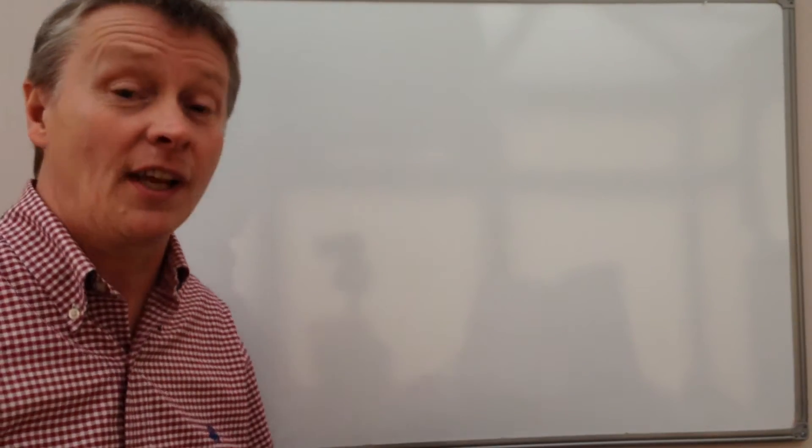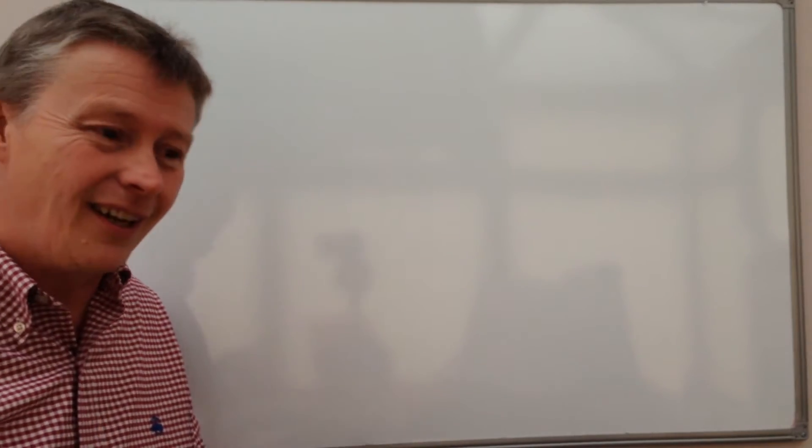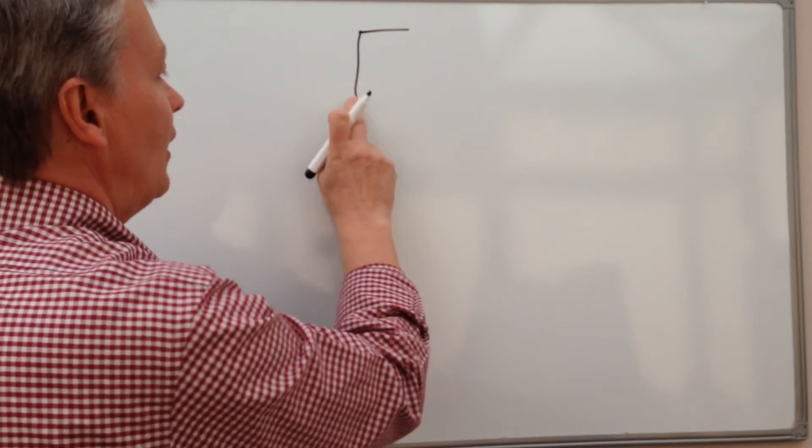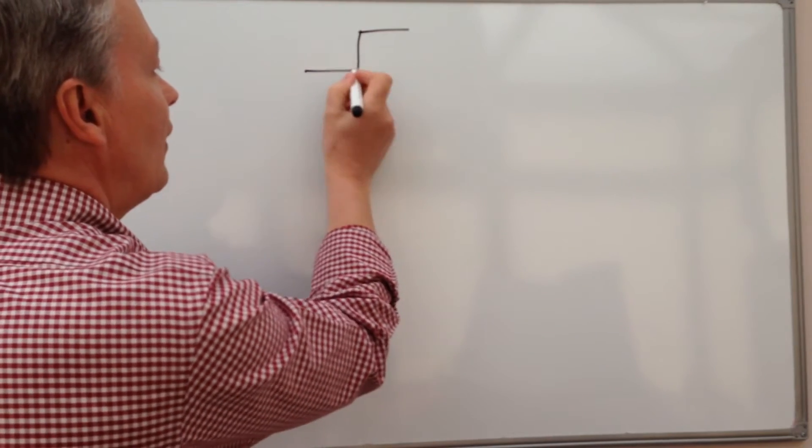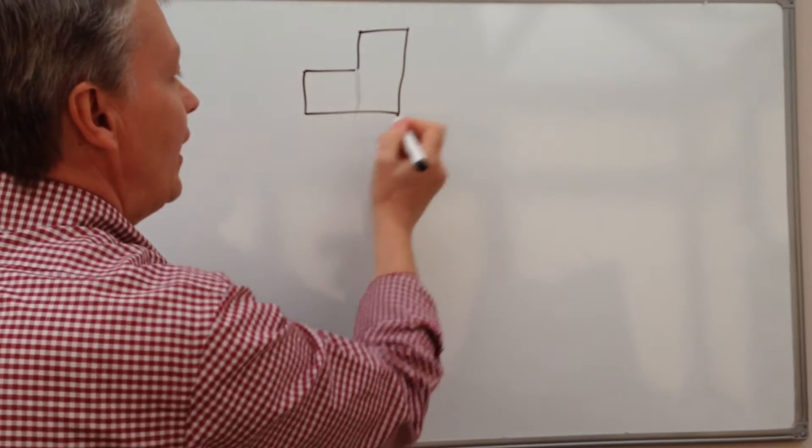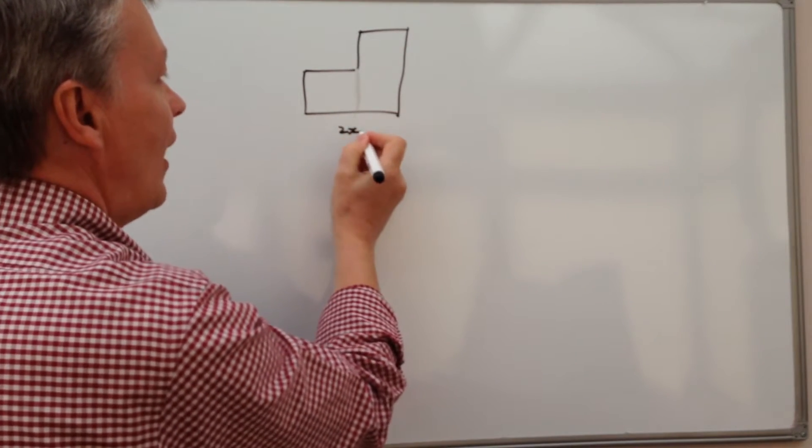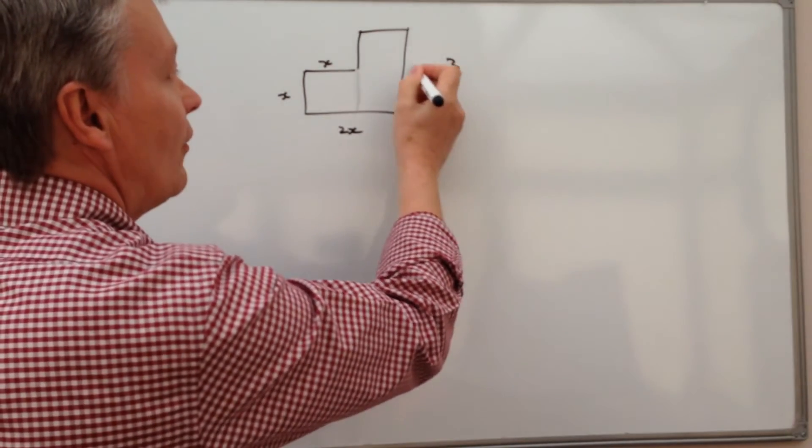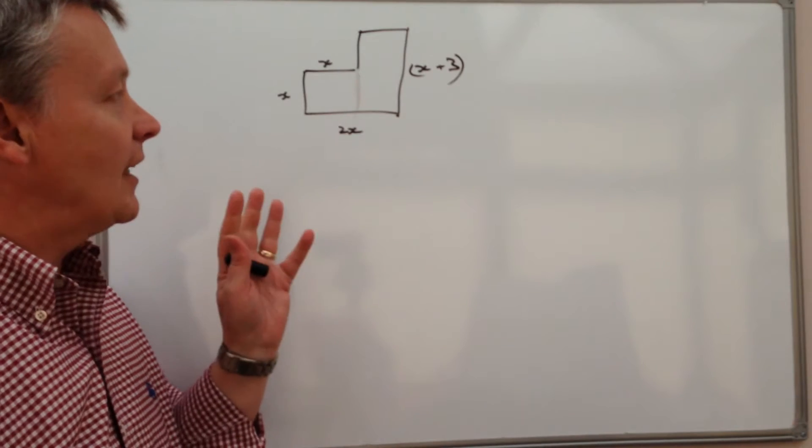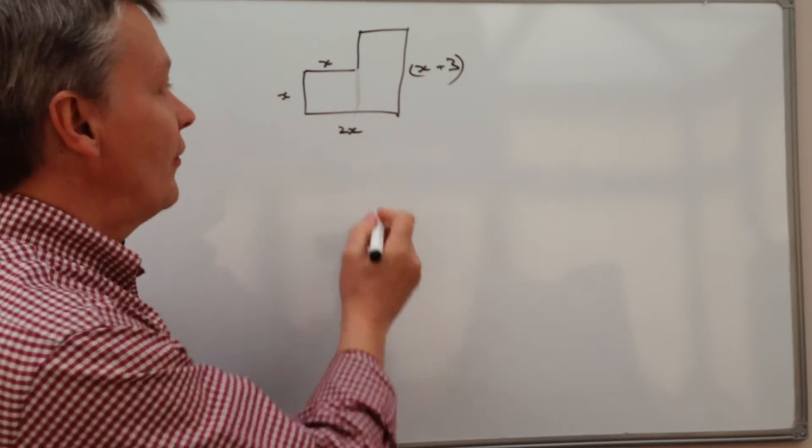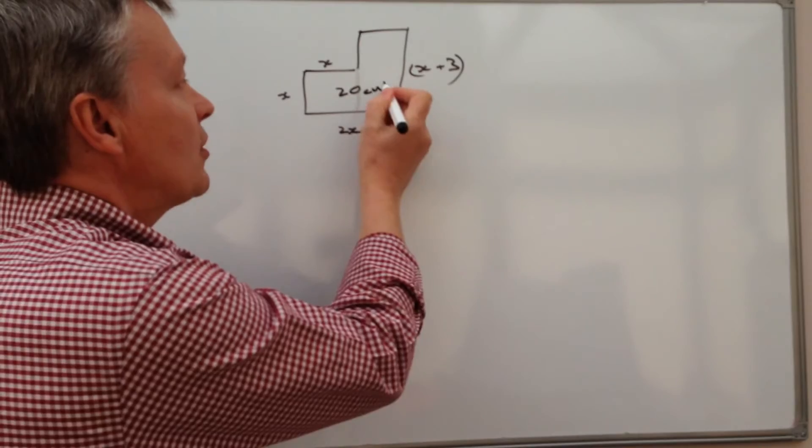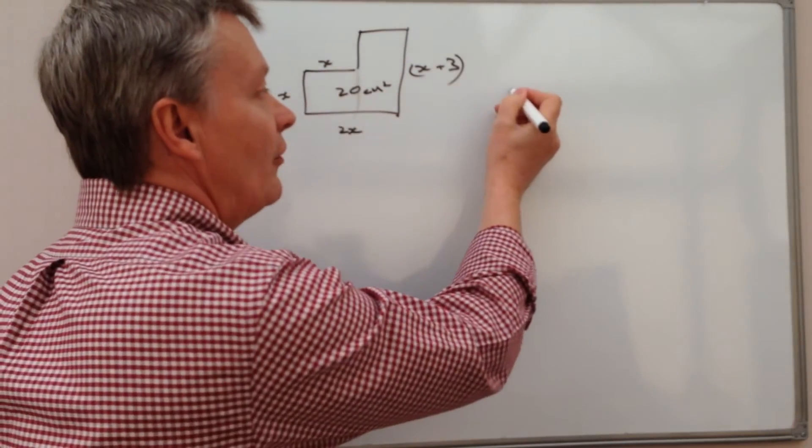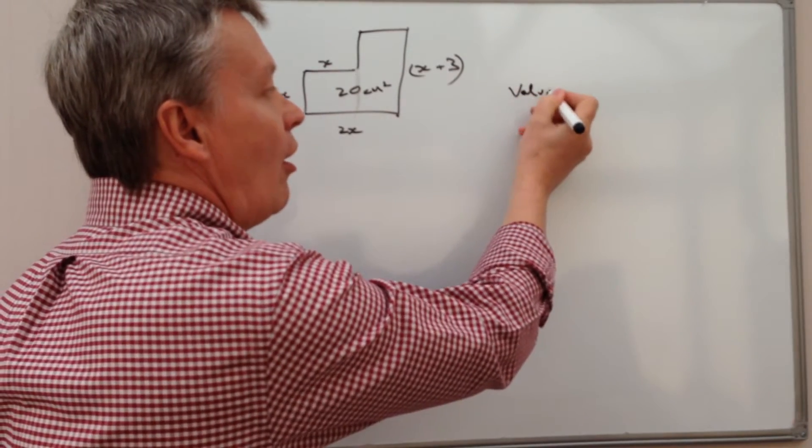The kind of problems that you generally tend to get at A star type level usually fall into something like this. So what we've got is an area, and this bit here is 2x, this is x, this is x, and this is x plus 3. And what they tell us is that the overall area of this shape is 20 centimeters squared. And what you're looking to do is to find out the value of x.